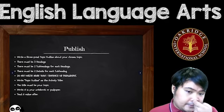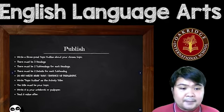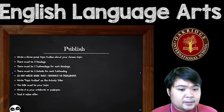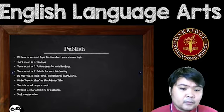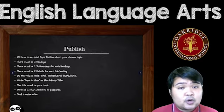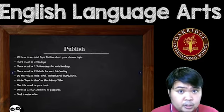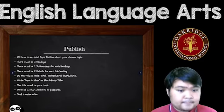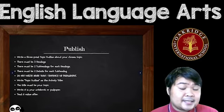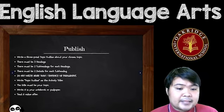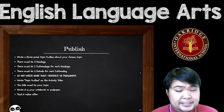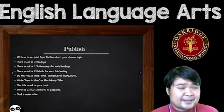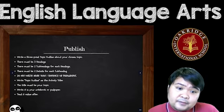For your publish, write the three-point topic outline about your chosen topic. Same instructions: three headings, two subheadings for each heading, and two details for each subheading. Do not write more than one sentence or paragraphs — you can have one sentence but only for the subheadings and the details. Write 'Topic Outline' as your activity title, and the title must be your topic — for example, pandas, birds, chocolates — it's up to you.